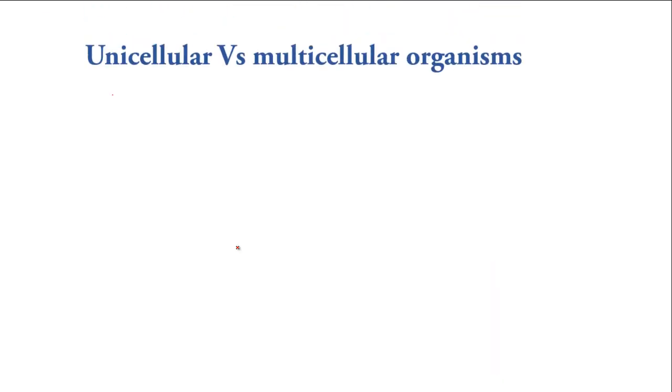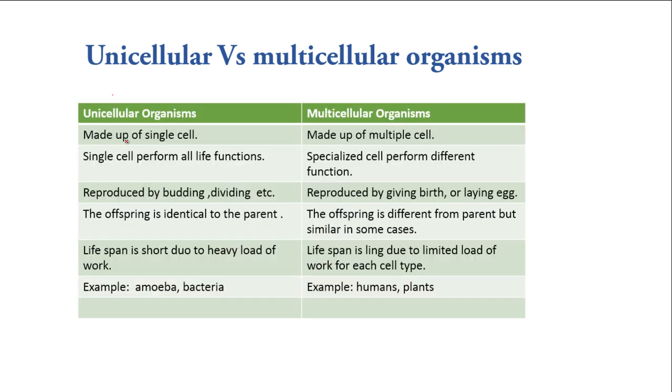Let's differentiate between unicellular and multicellular organisms. In unicellular organisms, they are made up of single cells. In multicellular organisms, they are made up of multiple cells. In unicellular organisms, single cells perform all life functions. In multicellular organisms, specialized cells perform different functions.